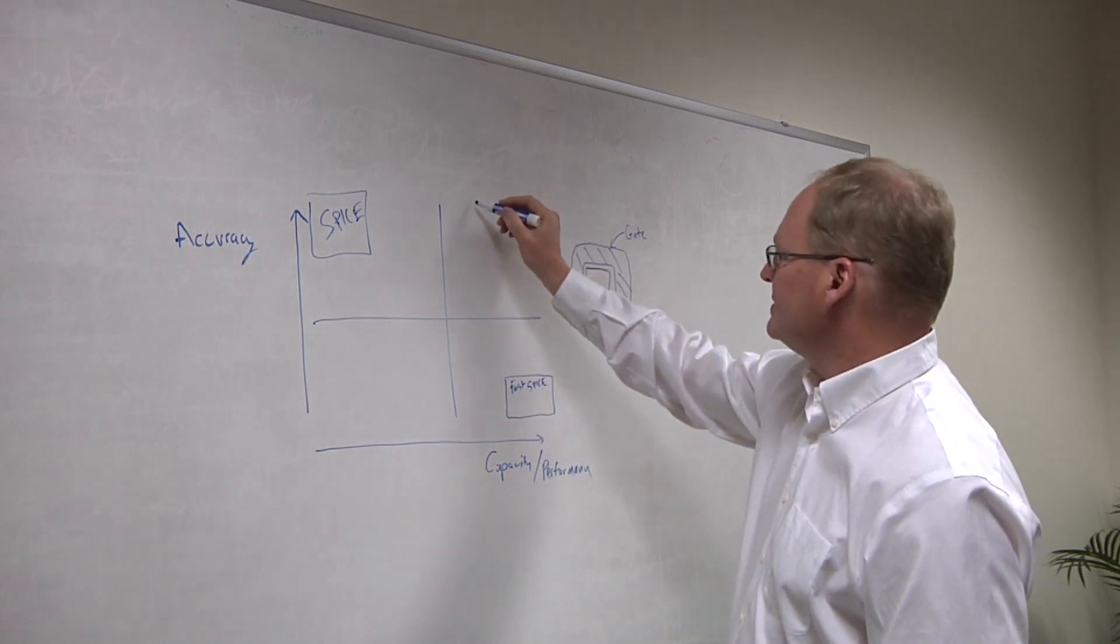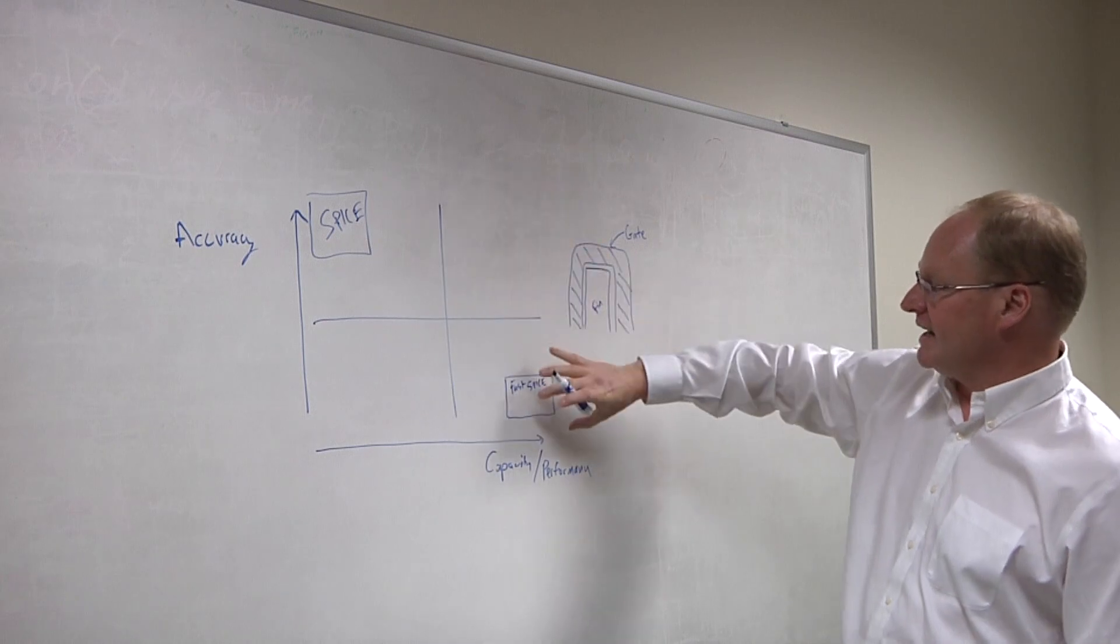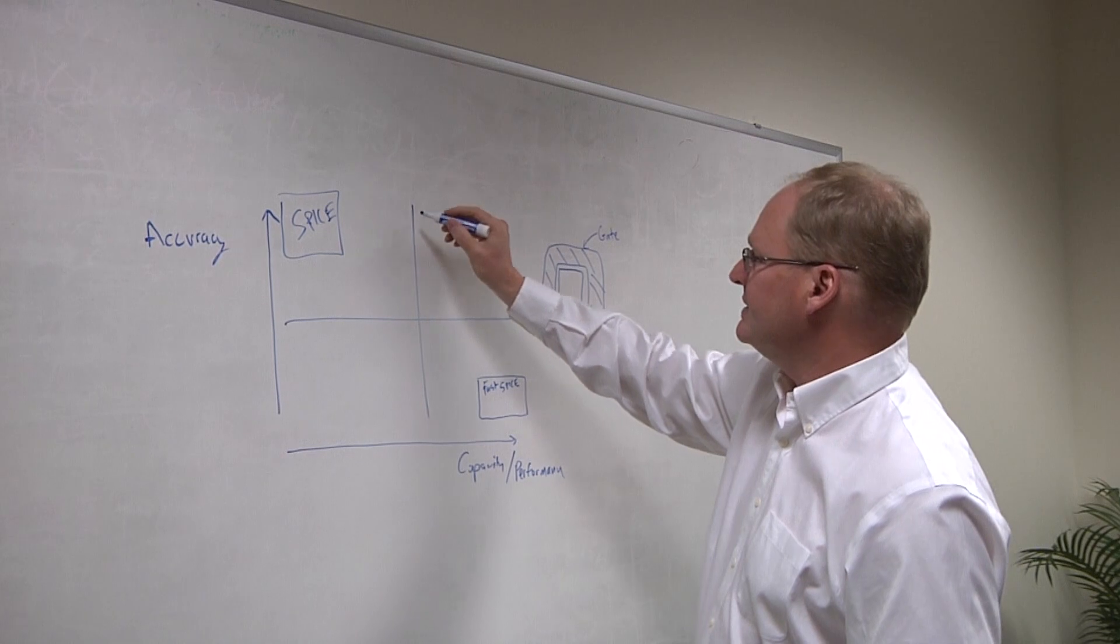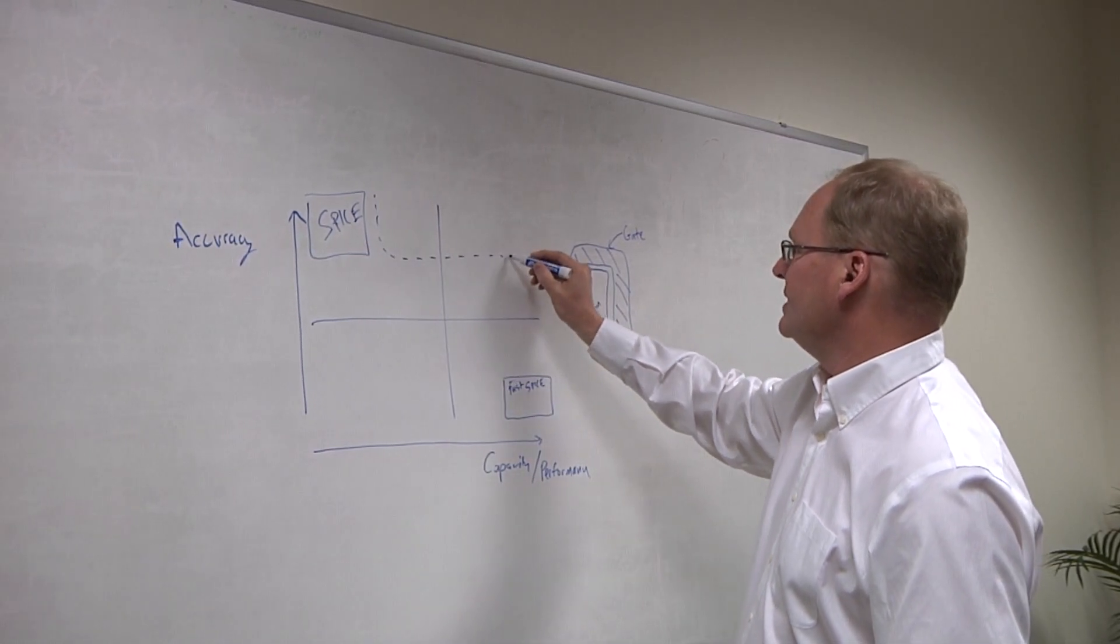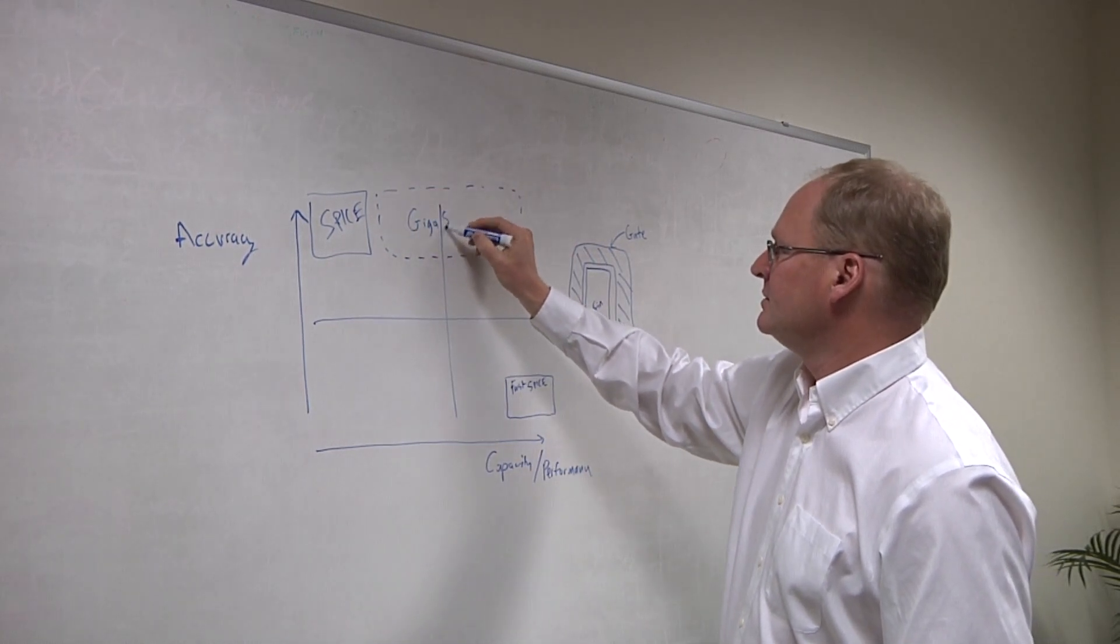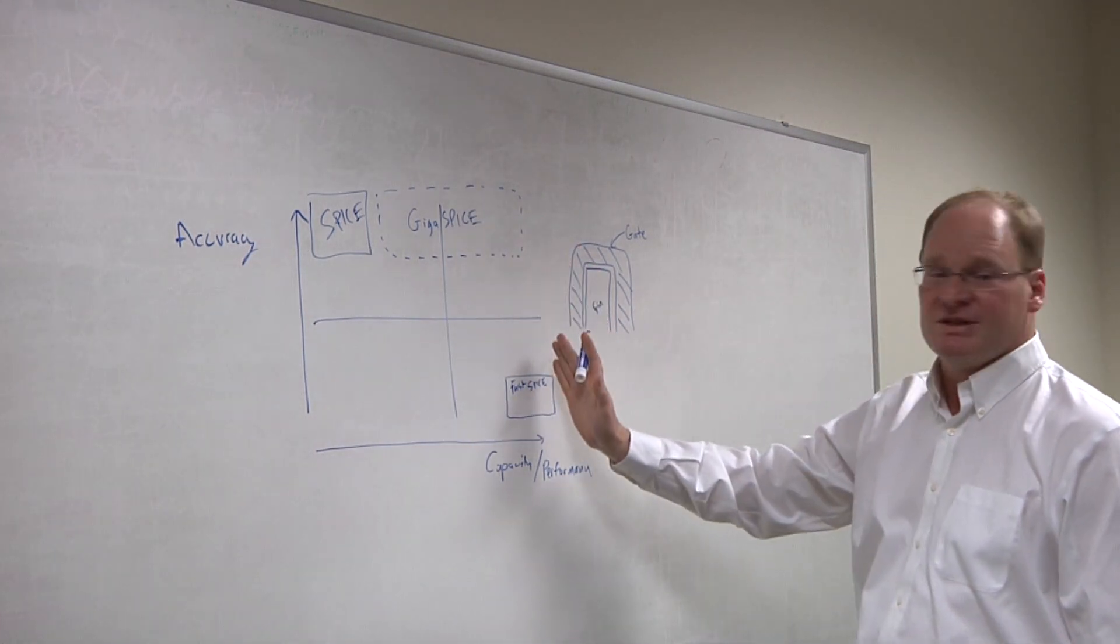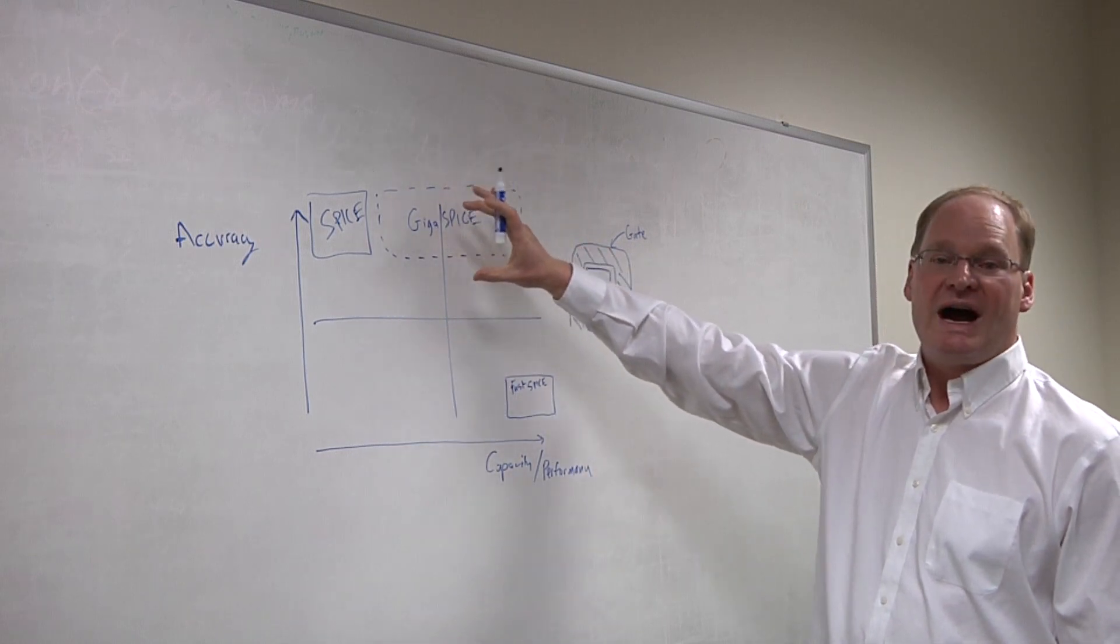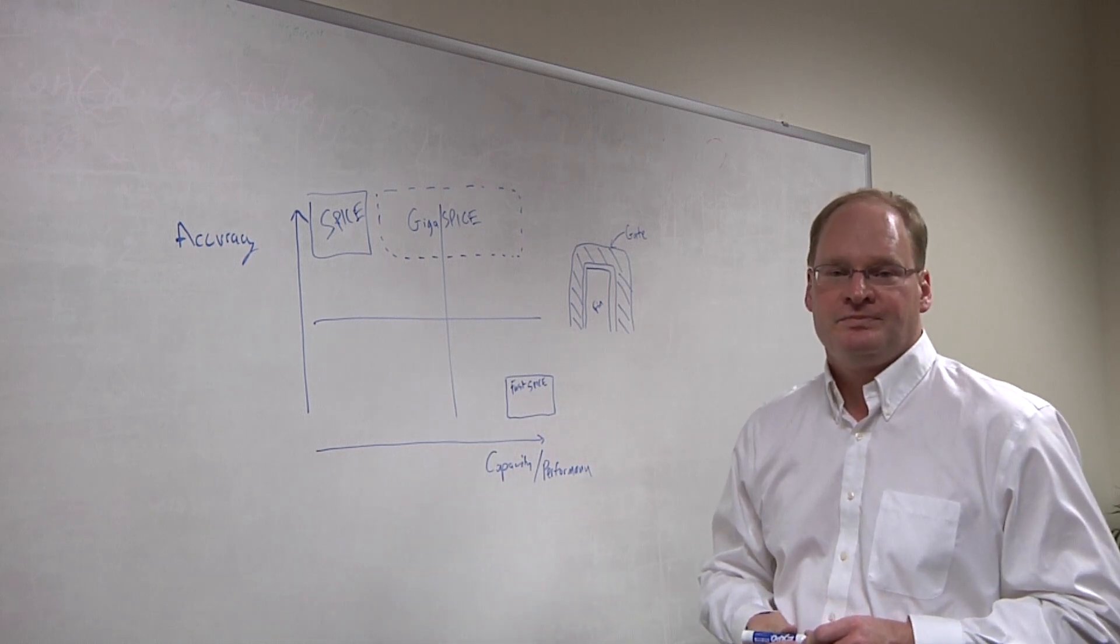And if you wanted to have high capacity or performance, you're down here in the fast Spice world. And where we really want to be is right up in here. This would be the ideal quadrant where you're getting perfect Spice accuracy, but you're getting this fast Spice type of capacity. So this is the space that GigaSpice plays in. So what we have innovated is a tool that can play in this space, which can go up and approach the highest limits of fast Spice in terms of capacity and performance, but keep you in this high accuracy range that's required for FinFET design.